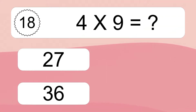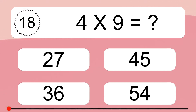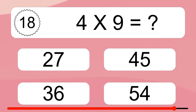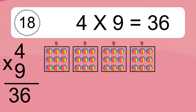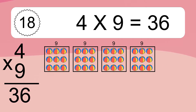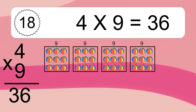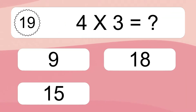4 times 9 equals what? 4 times 9 equals 36. We have 4 boxes and each box has 9 colorful balls inside. If you count all the balls in all the boxes together, you will have 4 times 9 balls. This equals 36 balls.